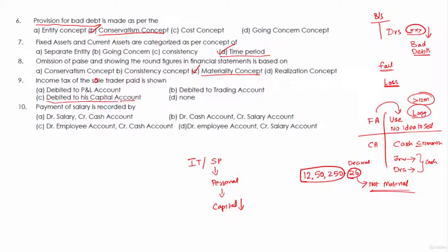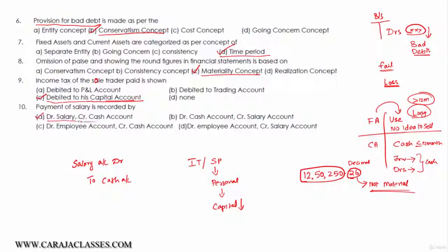Next: payment of salary is recorded by which entry? First, identify that salary is a nominal account — debit all expenses — so salary account should be debited. What is going out? Cash is going out. Cash comes under a real account — debit what comes in, credit what goes out — so cash is going out and we credit the cash account. Therefore the entry is: debit salary account, credit cash account. The answer is debit salary, credit cash.